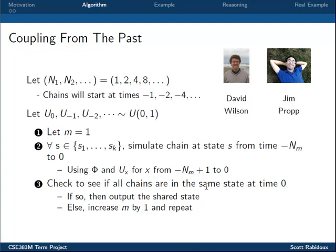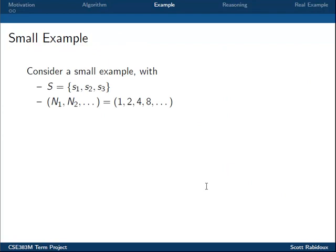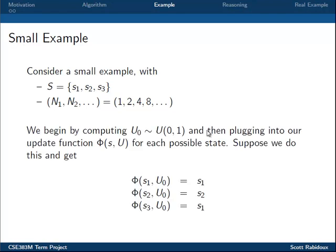Let's look at a small example to better understand how the algorithm works. Say we have a state space S with 3 possible states, and our starting times n are 1, 2, 4, 8, etc. We start with our chains at time negative 1 and compute our first random number between 0 and 1, plugging it into our update function for each of the 3 states. Assume we get the following output: starting at state 1 we move to state 1, starting at state 2 we move to state 2, and starting from state 3 we move to state 1. So our chains look like this.